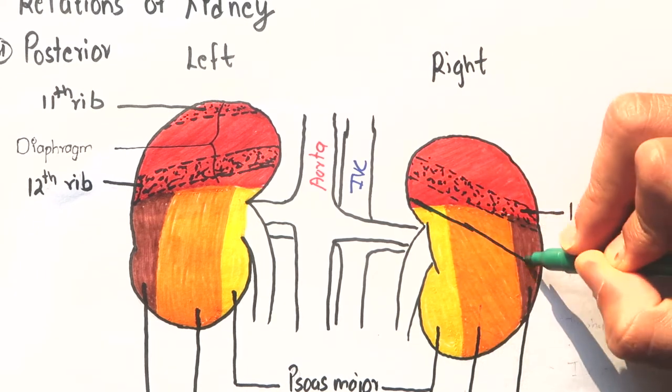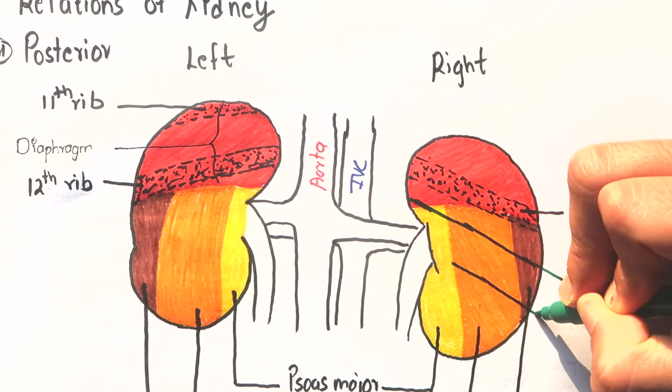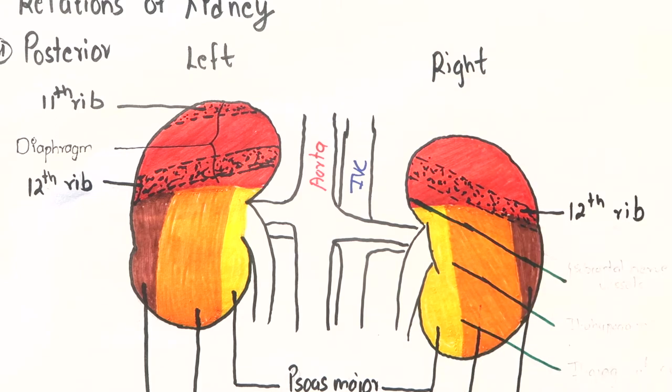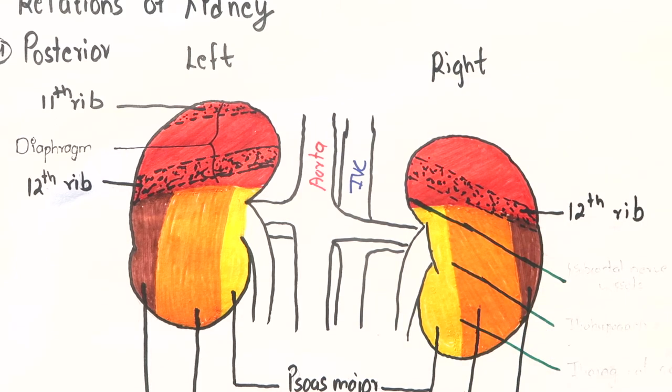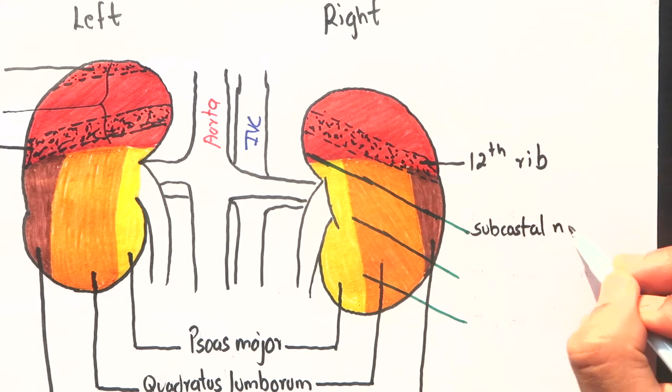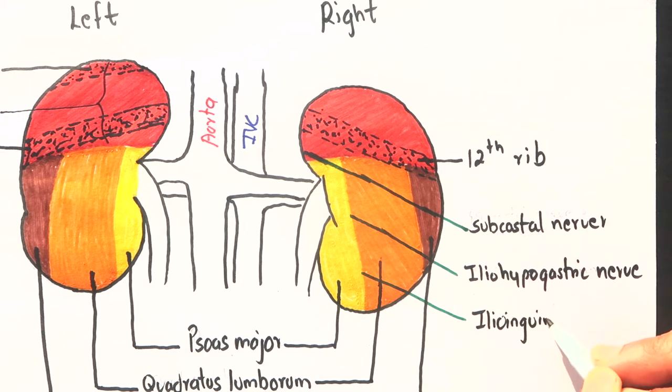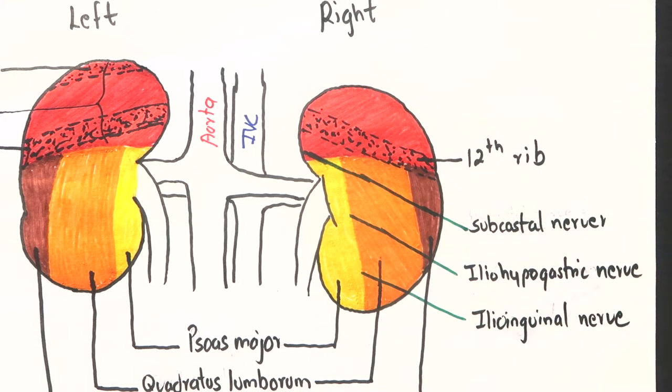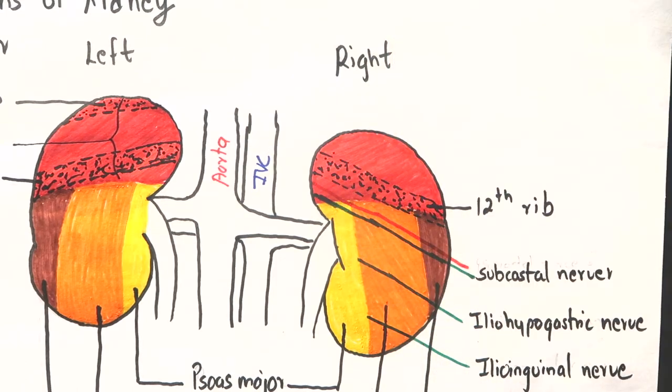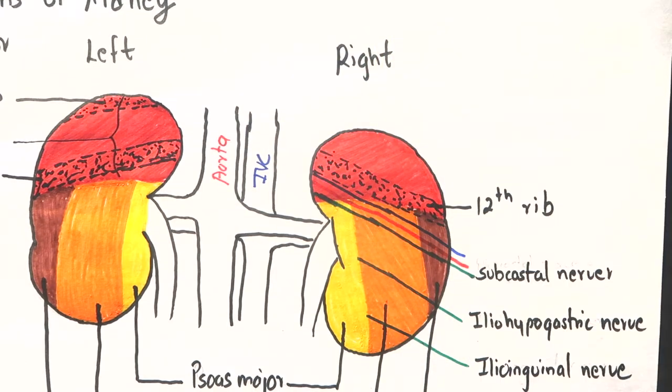Besides three muscles, the posterior relation of kidneys also consists of three nerves. They are subcostal nerve, iliohypogastric nerve and ilioinguinal nerve. Subcostal vessels are present along with subcostal nerve.